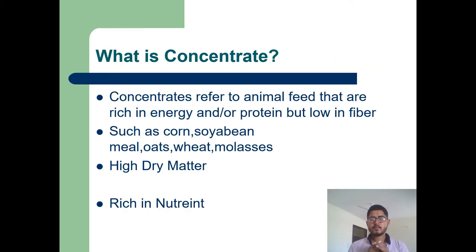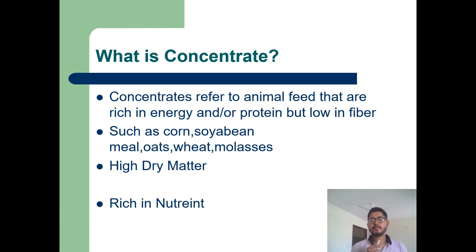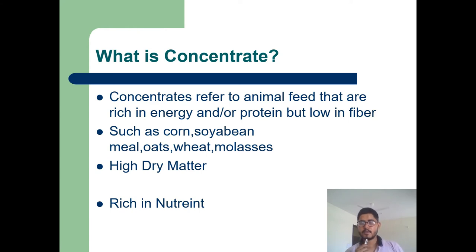First of all, let us learn about what is concentrate. Concentrate refers to animal feed which is rich in energy and rich in protein — it has high energy content and protein content but low in fiber content. Examples include corn, soybean, oats, molasses, and wheat. These are the grains, meals, and products which combine together to form concentrates.